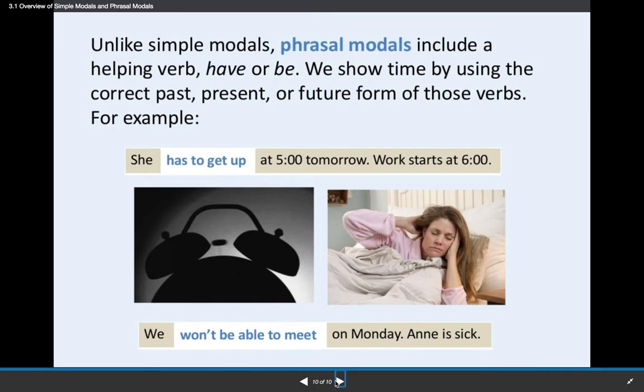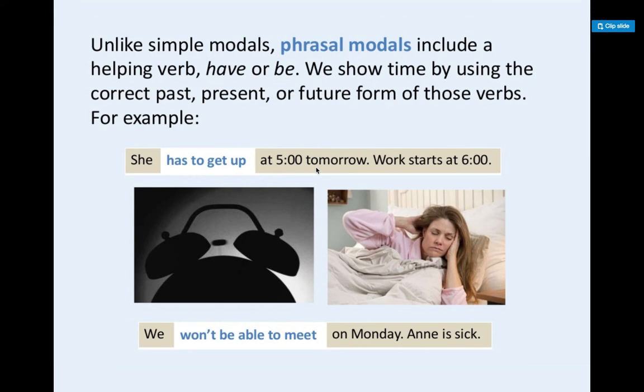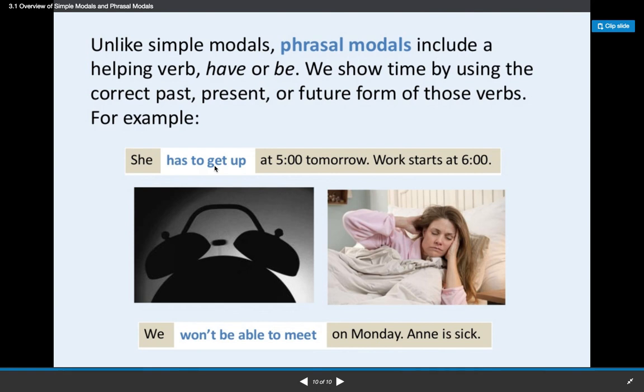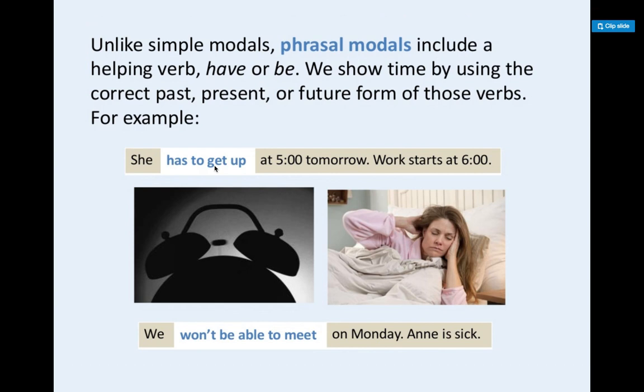Unlike simple modals, phrasal modals include a helping verb have or be, and we show time by using the correct past, present, or future form of those verbs. She has to get up at five o'clock tomorrow. Work starts at six, but I could say she had to get up at four yesterday because her job started even earlier.